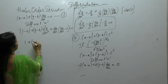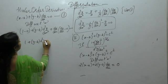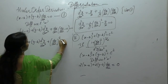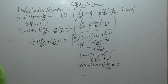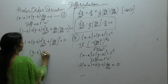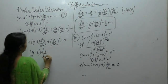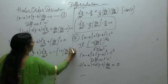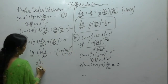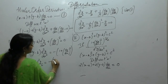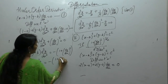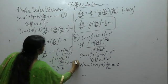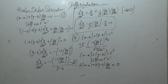1 plus (y minus b) times d²y/dx² plus (dy/dx)² is equal to 0. So we get (y minus b) times d²y/dx² equals minus 1 plus (dy/dx)². From here we get the value of the second derivative as minus [1 plus (dy/dx)²] upon (y minus b). Let this be equation number 2.